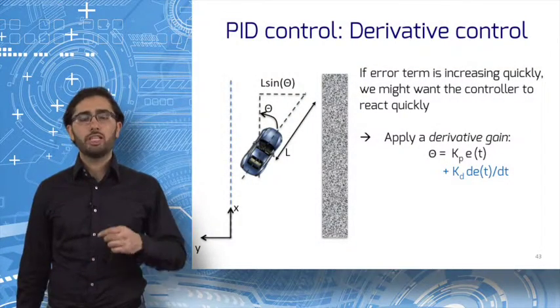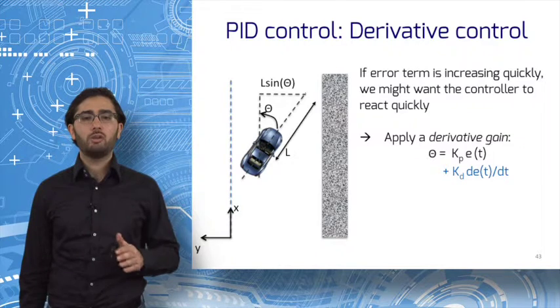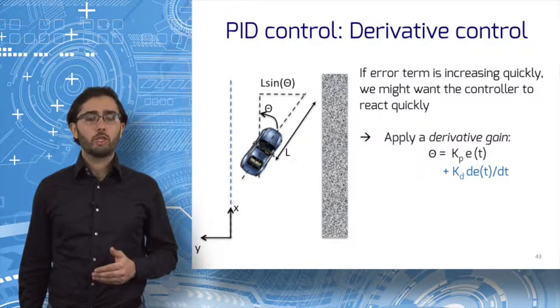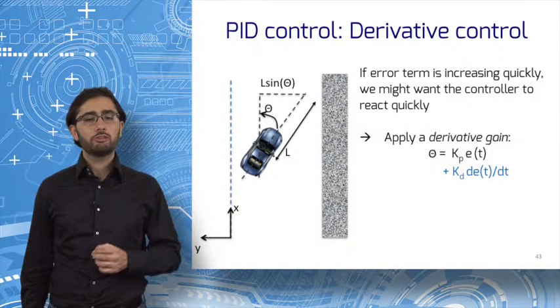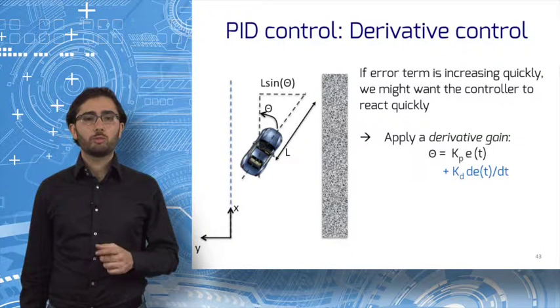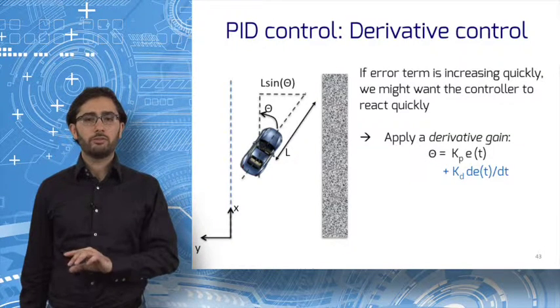Proportional control follows the error's current value, not how fast it's changing. But if the error term increases quickly, you might want to introduce corrections also quickly. This is where derivative control comes in. In derivative control, we add a term that is proportional to the error derivative, as shown here.